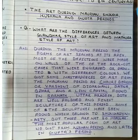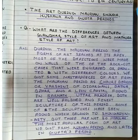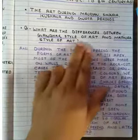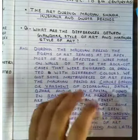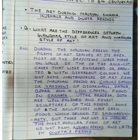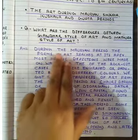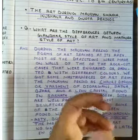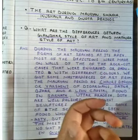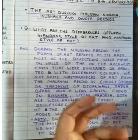Our first question is: what are the differences between the Gandhar style of art and the Mathura style of art? During the Mauryan period, the forms of art reached great heights and were considered very refined.